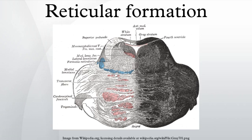Somatic motor control: lower somatic motor neurons send their axons to the reticular formation nuclei, giving rise to the reticulospinal tracts of the spinal cord. These tracts function in maintaining tone, balance, and posture, especially during body movements. The reticular formation also relays eye and ear signals to the cerebellum so that the cerebellum can integrate visual, auditory, and vestibular stimuli in motor coordination.